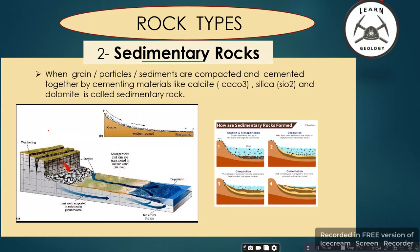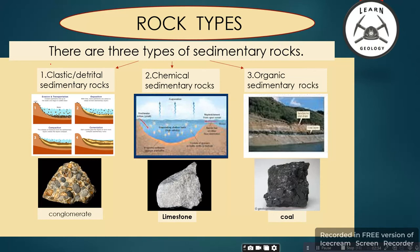For example, when metamorphic or igneous rocks are present and weathering or landsliding occurs, these weathered particles are picked up by water and transported. During transportation, grain size decreases, and they are settled down from the water, making different layers as shown in this picture. They are then compacted and cemented by calcite, silica, and dolomite to form sedimentary rock.